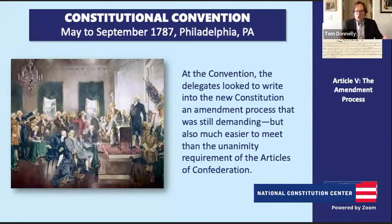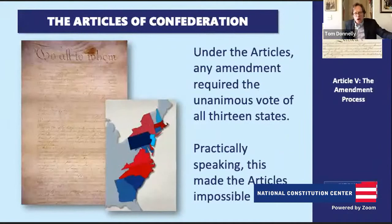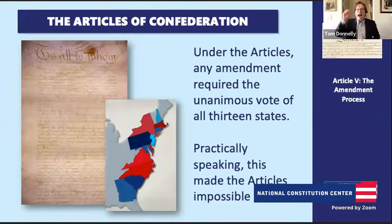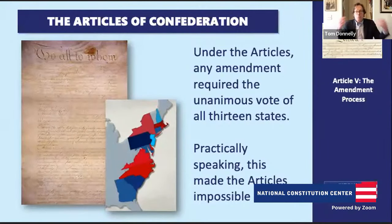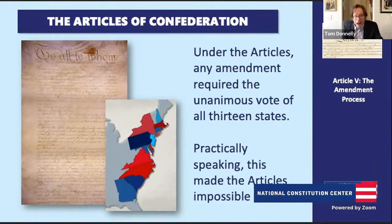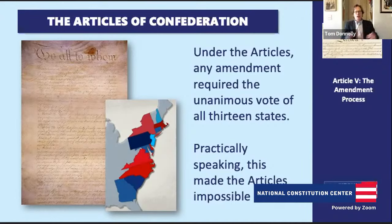This balance they tried to strike grows out of their own historical experience. They had already lived under a national government that was impossible to amend: the Articles of Confederation. It had an amendment process, but the requirement was that every single state had to agree to any amendment. You can imagine how impossible this was — which is simply why we never amended the Articles of Confederation. People thought the system wasn't working well, the vast majority would like it to change, but under the formal rules of the Articles, they couldn't change it.